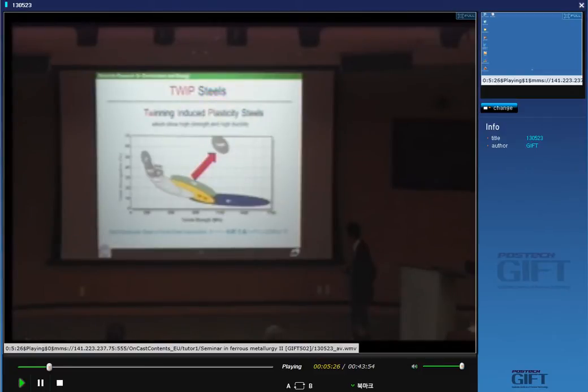Even in advanced TRIP steel, the best one is located right here. But look at the position of the TWIP steel. Very good. You can see more than 50 percent in total elongation, even at the very high tensile strength level, more than 1,000 megapascal, 1 gigapascal. It is good.